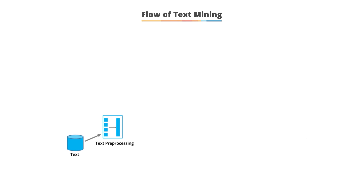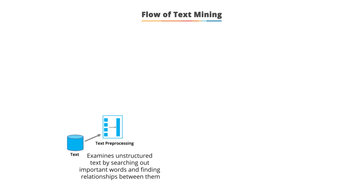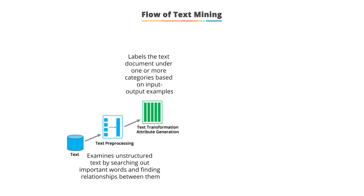There are five techniques used in text mining. First, information extraction or text pre-processing is used to examine unstructured text by searching out important words and finding relationships between them. Second, categorization or text transformation generates attributes and labels the text document under one or more categories.